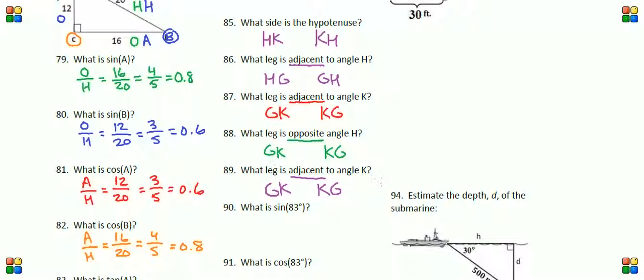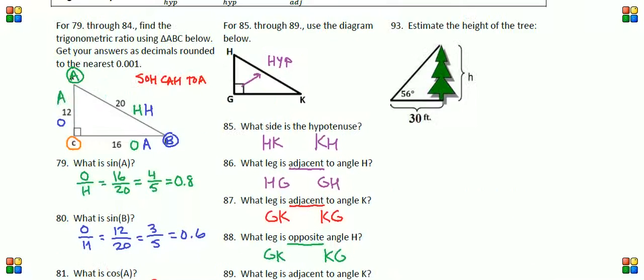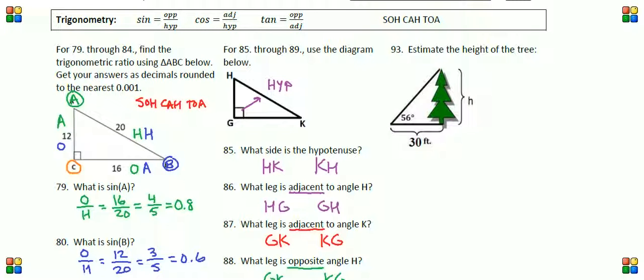I may have already corrected that on your printout, but because my version is showing adjacent, it's going to be GK. If the question was what leg is opposite to angle K, that would be HG. Here's angle K—opposite leg, the leg that does not touch angle K, is HG.